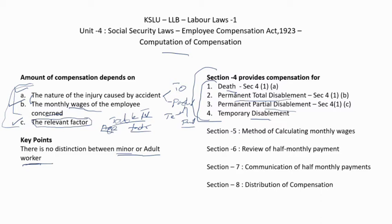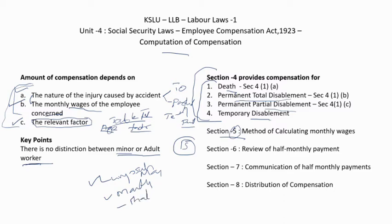Relevant sections for computation of compensation include Section 5 for calculating monthly wages, and Section 6 which covers payment modes. Compensation can be paid as a lump sum or monthly; in some cases it is paid half-monthly. Sections 4 through 8 collectively deal with compensation calculation, modes of payment, half-monthly payment analysis, and distribution of compensation.